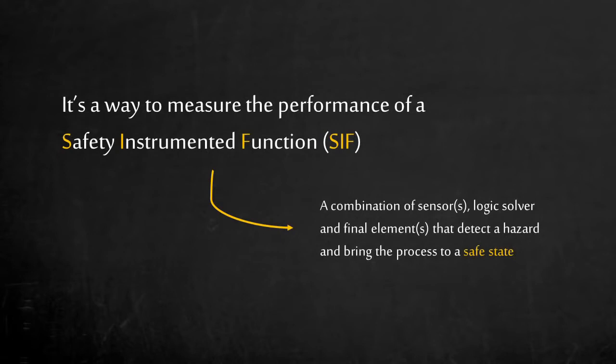As an example, you can use a pressure transmitter to detect high pressure in the process and signal a valve to close. This is an automated function that can bring the process to a safe state. It is important to understand that Safety Integrity Level is applied strictly in the context of a safety instrumented function.